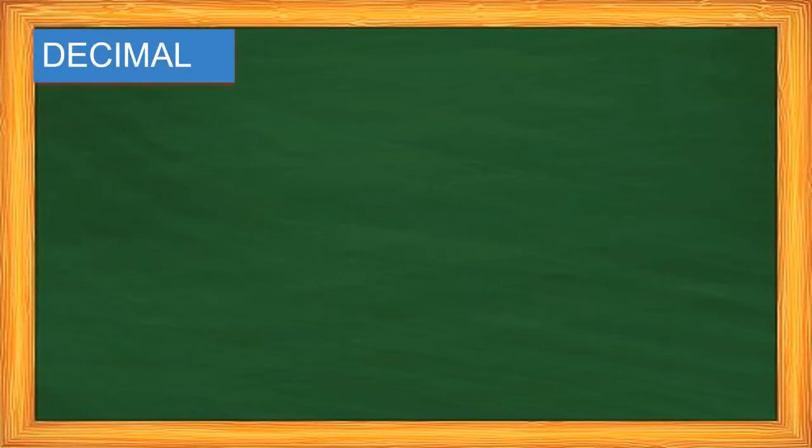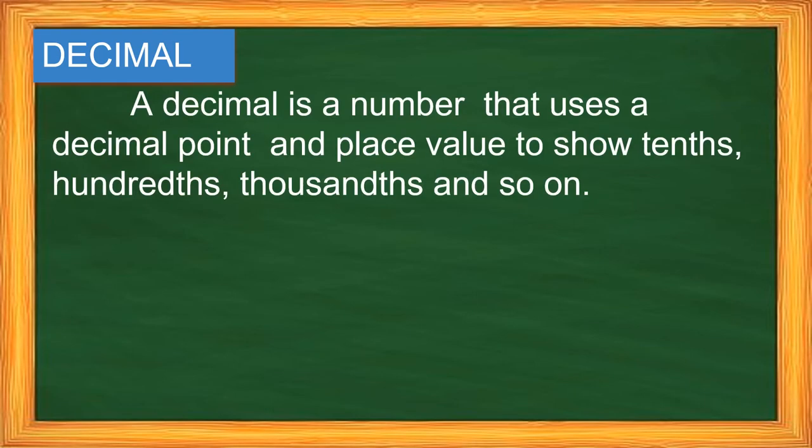And we are now talking about decimals and it will be about addition and subtraction. So what exactly is a decimal? A decimal is a number that uses a decimal point and place value to show tenths, hundredths, thousandths, and so on.